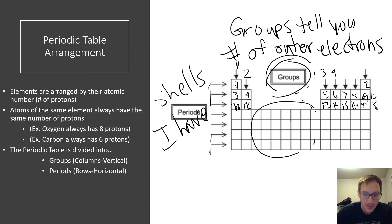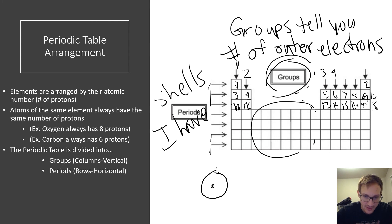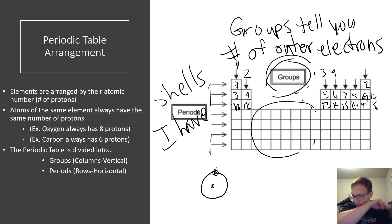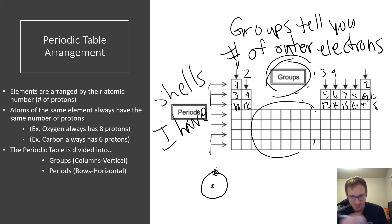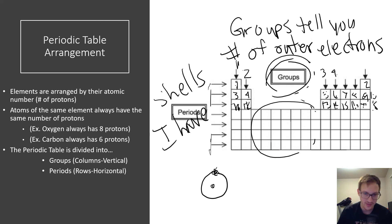For example, a hydrogen atom has one proton, one shell of electrons, and one electron in that outer shell. We'll talk more about electron shells, Bohr models, and Lewis dot structures in our next video.